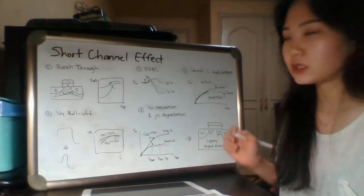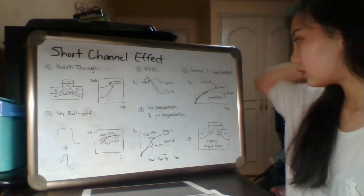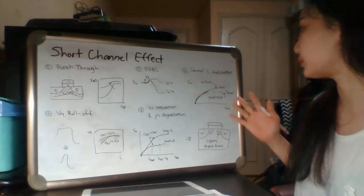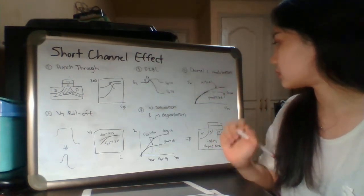Last is channel length modulation. We would expect the drain current ID to be constant in saturation.